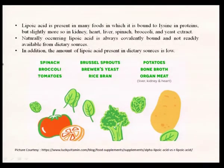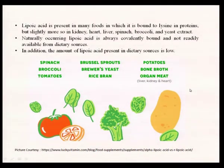Looking at food sources, spinach, broccoli, and tomatoes are rich in lipoic acid. You also have yeast extract and rice bran. Most of the B vitamins are also present in these same sources. Additionally, vegetables like potato, bone broth, and organ meat are also rich in lipoic acid. It is widely distributed across a variety of food sources, so an assorted dietary choice would blend a variety of nutrients from different sources.